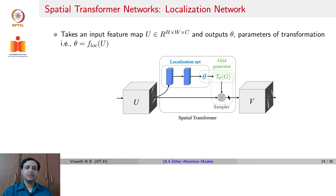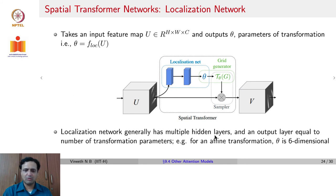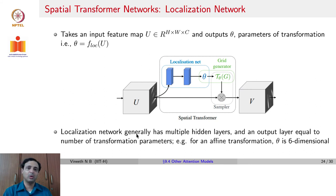The localization network takes an input feature map U of dimension H×W×C and outputs a set of parameters theta — the transformation parameters. The localization network can have multiple hidden layers, but its output layer contains the number of transformation parameters required to model the problem. For example, if we want the spatial transformer to deal with only affine transformations, the localization network would output six different values.